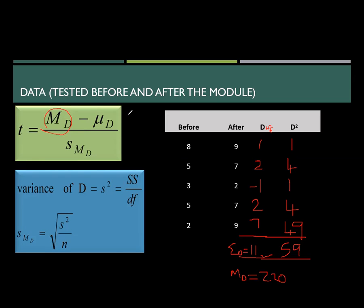So that is the mean. So we are sorted actually. 2.20 minus 0. So the numerator of the formula is sorted. So now we move on to the denominator.